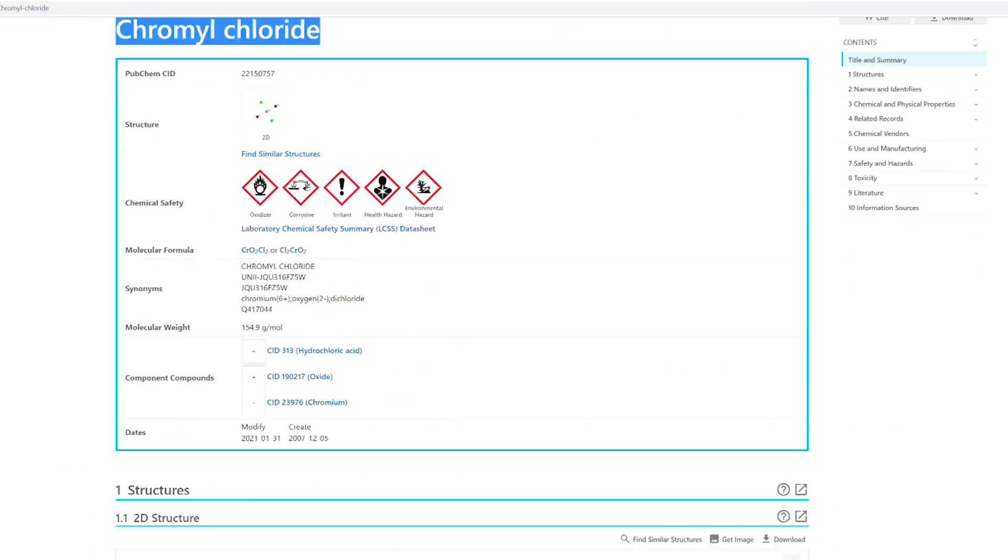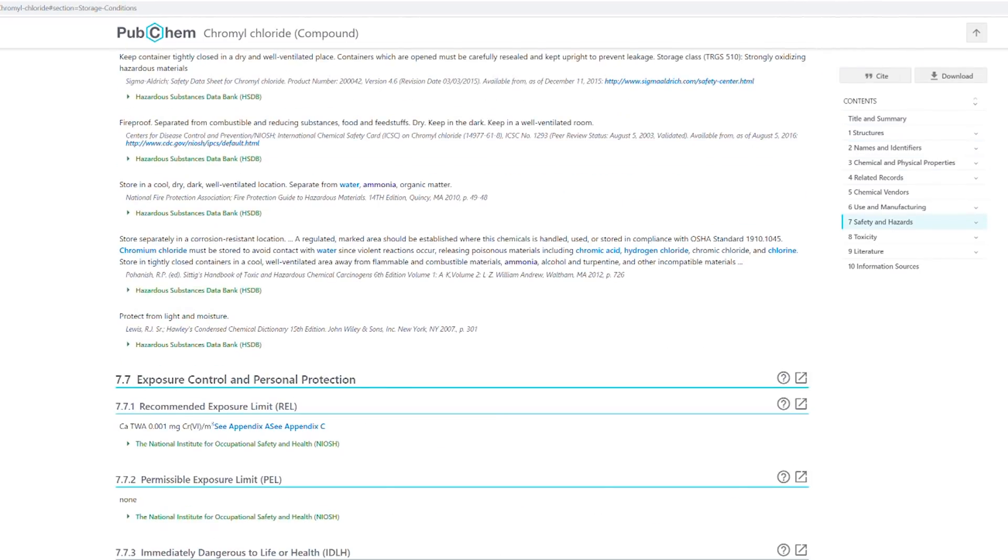I looked up a section about storage conditions in the chromyl chloride MSDS and I saw ammonia among other incompatible materials, which is quite obvious.